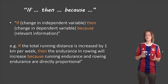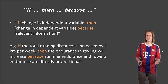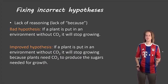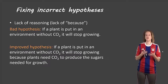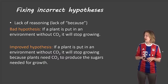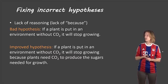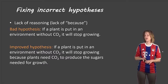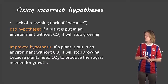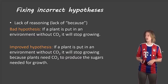Let's take a look at some faulty hypotheses and how to fix them — these are things seen very regularly in student reports. The first issue is lack of reasoning. We need to explain why we're making that hypothesis. Bad hypothesis: 'If a plant is put in an environment without carbon dioxide, it will stop growing.' Why? What's your reasoning? A better hypothesis: 'If a plant is put in an environment without carbon dioxide, it will stop growing because plants need carbon dioxide to produce the sugars needed for growth.'